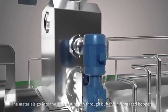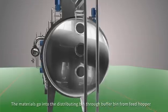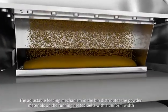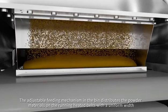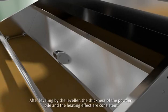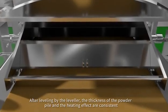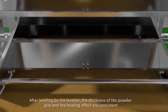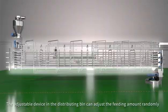The materials go into the distributing bin through buffer bin from feed hopper. The adjustable feeding mechanism distributes the powder materials on the running heated belts with uniform width. After leveling by the leveler, the thickness of the powder pile and the heating effect are consistent. The adjustable device in the distributing bin can adjust the feeding amount.